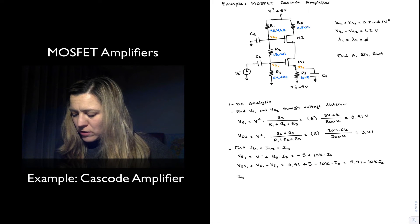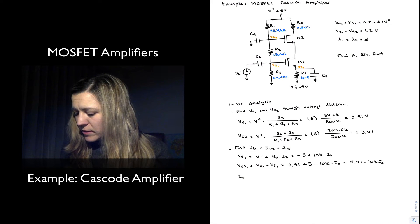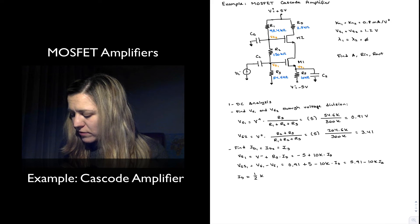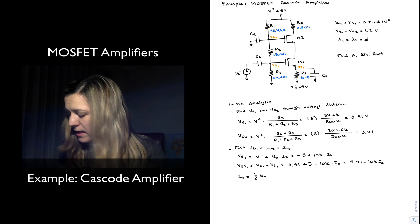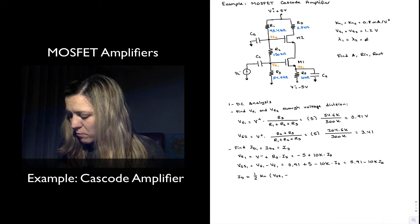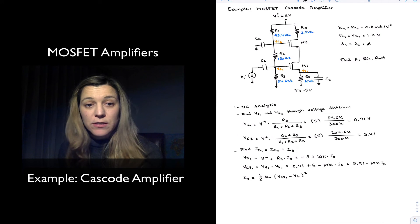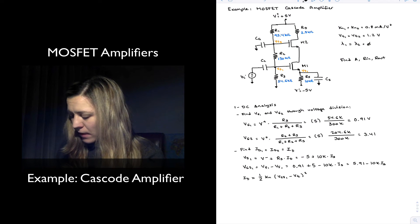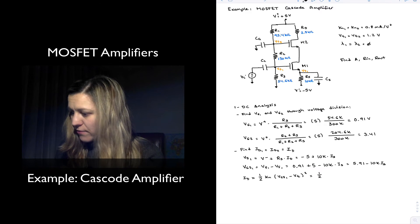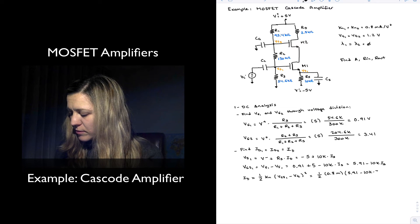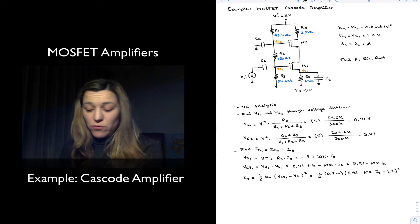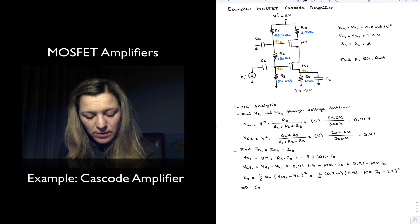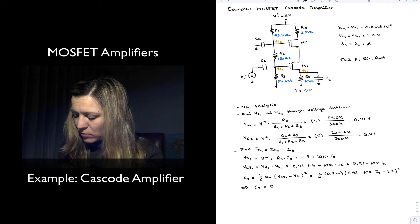In essence, VGS1 equals 5.91 minus 10k·ID. The expression for the current ID, assuming the transistors are in saturation, will be one-half of KN times (VGS1 minus VT) squared. This makes ID equal to one-half of 0.8m times (5.91 minus 10k·ID minus 1.2 volts) squared. Solving for ID, I get ID approximately equal to 0.4 mA.